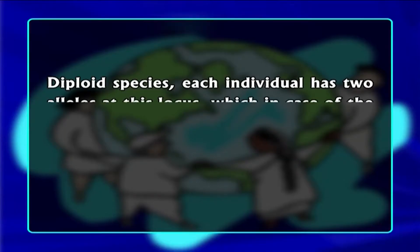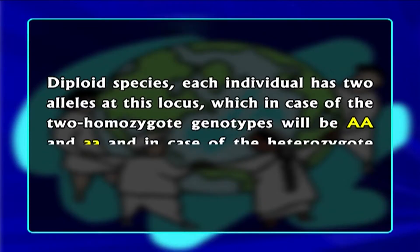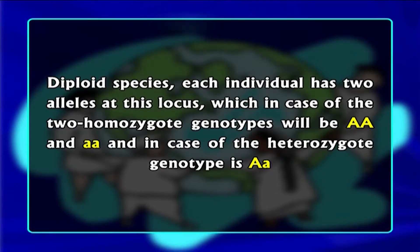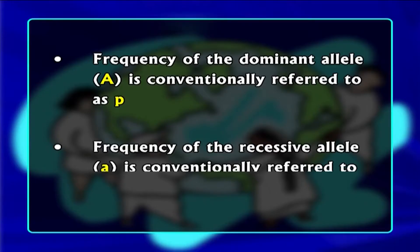Since this is a diploid species, each individual has two alleles at this locus, which in the case of the two homozygous genotypes will be capital A capital A, and small a small a, and in the case of the heterozygous genotype is capital A small a. In a two-allele system such as that which determines the scarlet tiger moth wing genotypes, the frequency of the dominant allele, capital A, is conventionally referred to as small p, and the frequency of the recessive allele, small a, is conventionally referred to as small q.